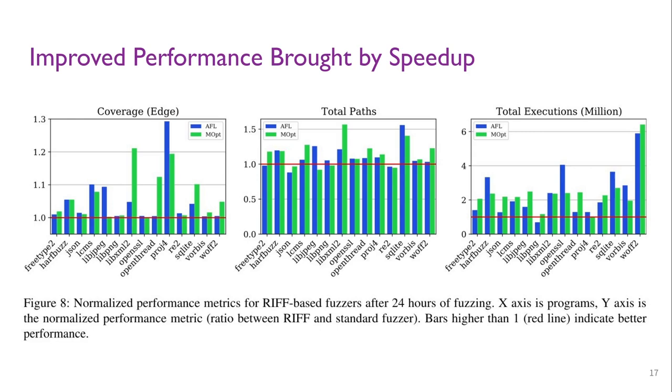On average, RIF improves the coverage of AFL and AFLMOpt by 4.96% and 6.25% respectively. The improvement is consistent for individual programs. Among all the 28 experiments, RIF is the best for 27.